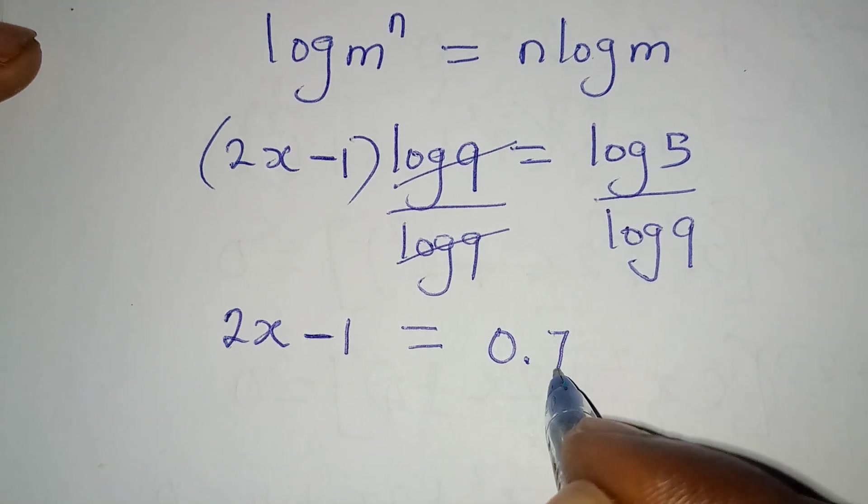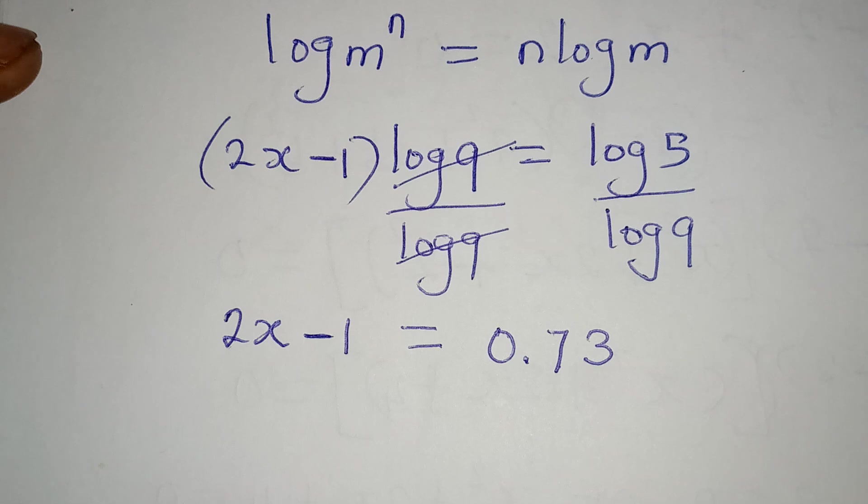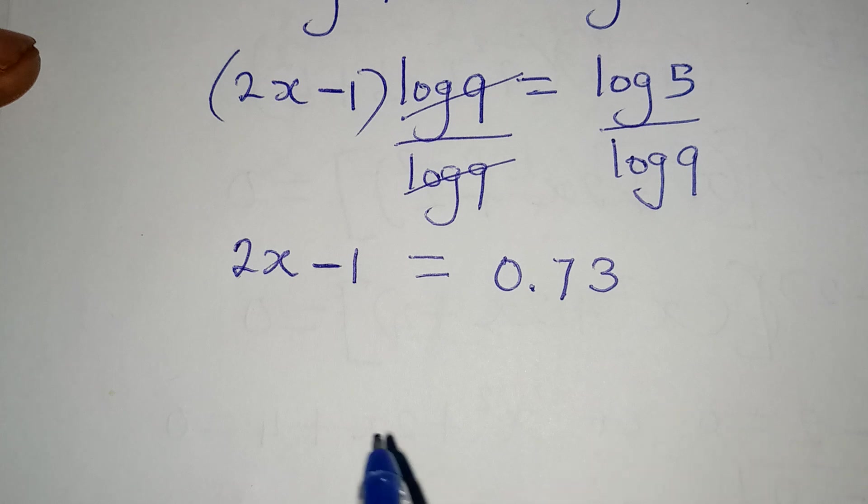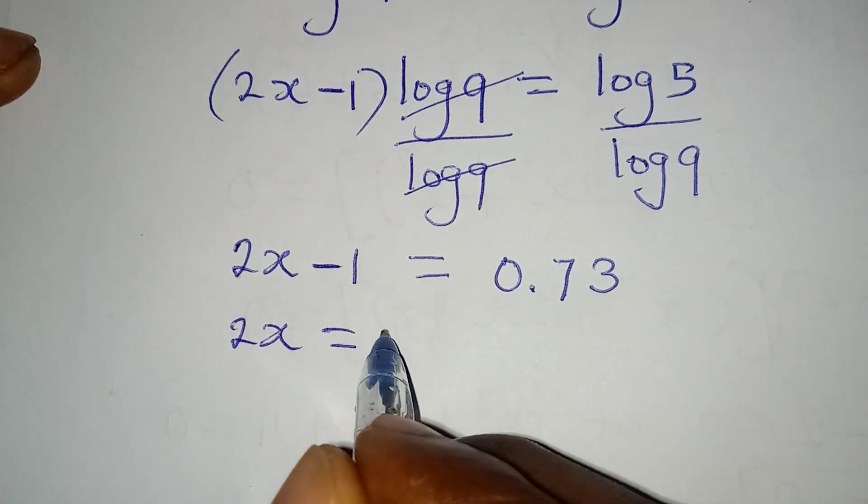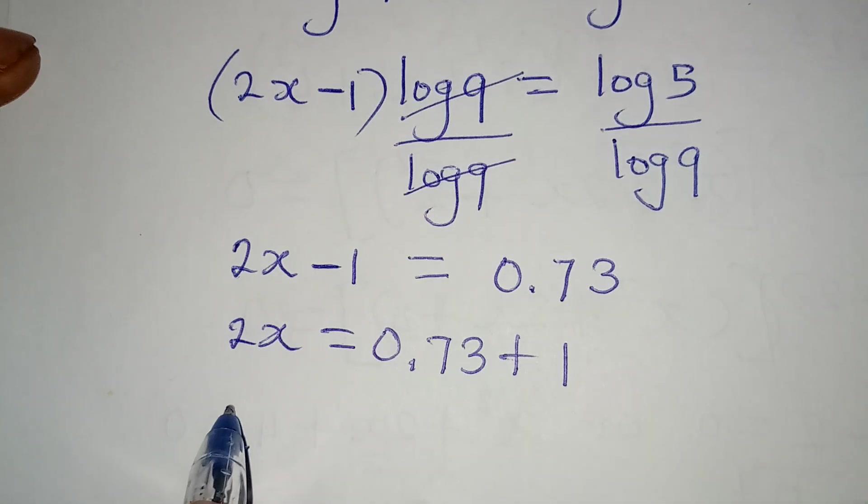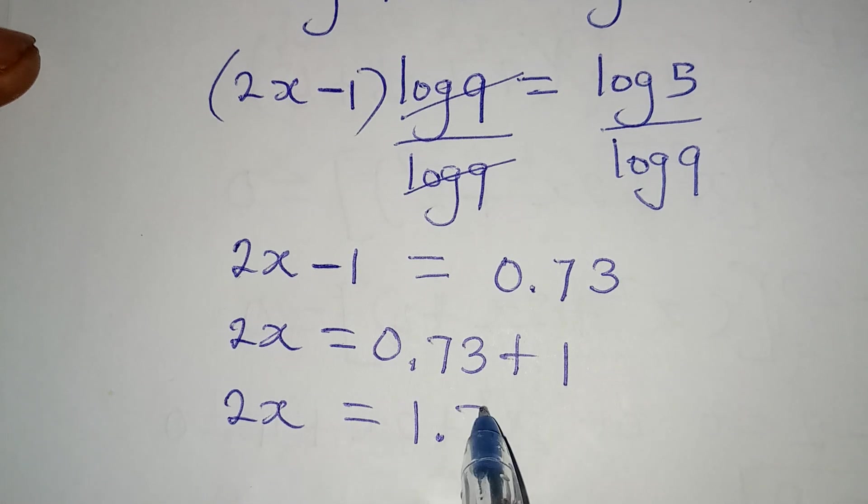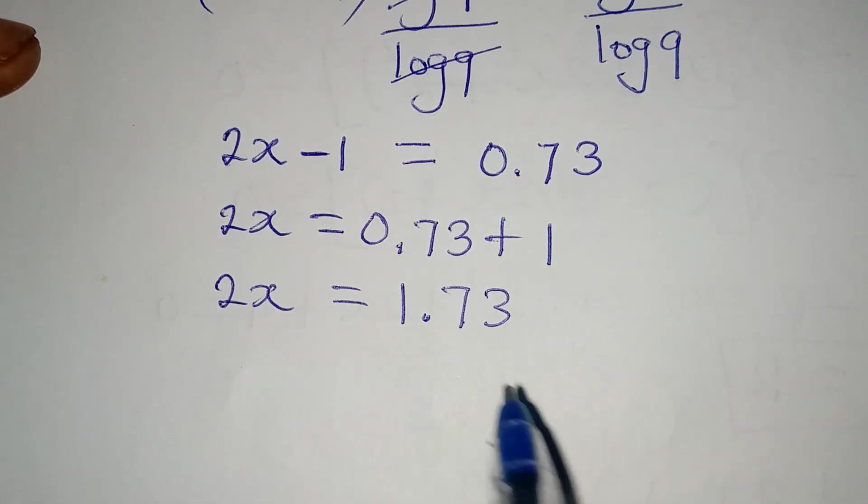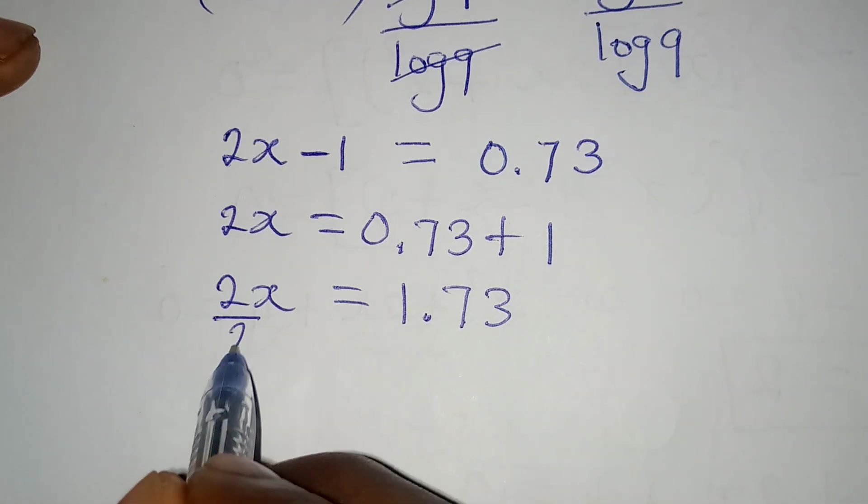And then from here you can get the value of x, because 2x will be equal to 0.73 plus 1, and then 2x equals 1.73. Now I will have to divide both sides by the coefficient of x, and that is 2.